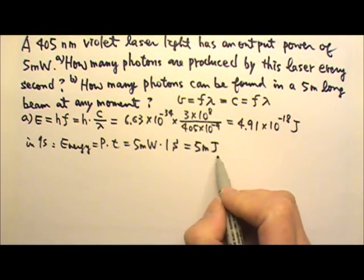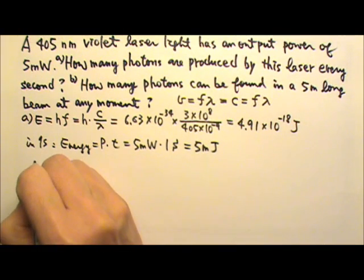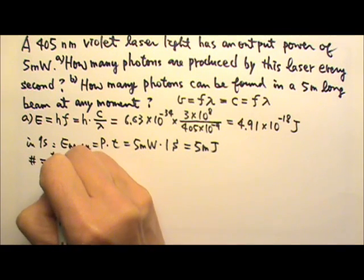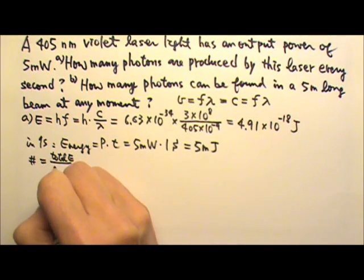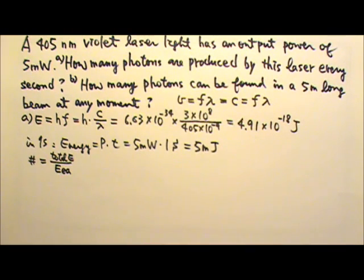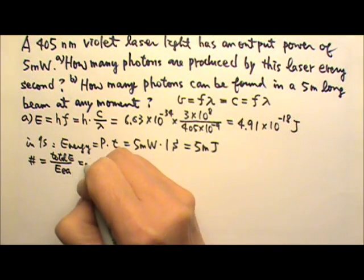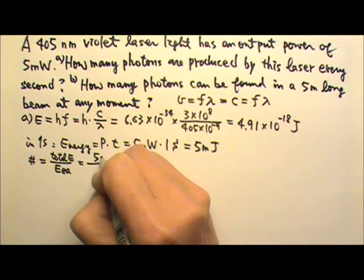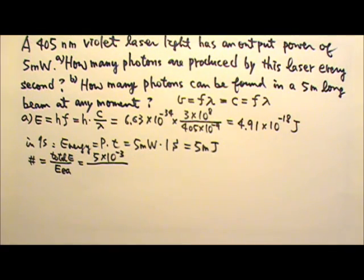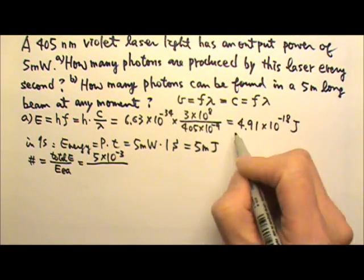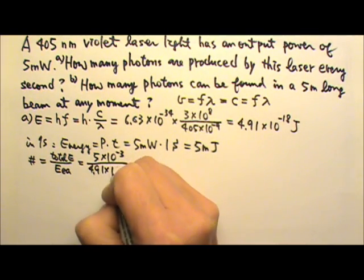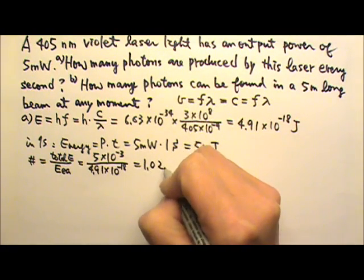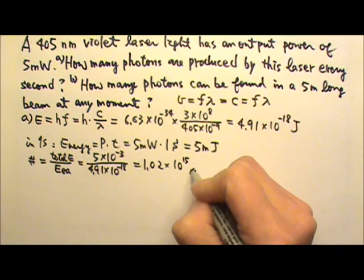That's the total energy produced by this laser beam, and we want the number of photons. The number of photons will be the total energy divided by how much energy each photon can provide. So the total energy is 5 milli, 10 to the negative 3rd Joules, and every photon will contribute 4.91 times 10 to the negative 18. That means we get 1.02 times 10 to the 15th photons.